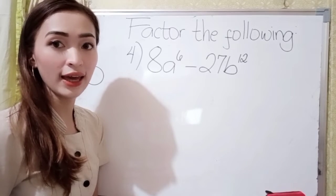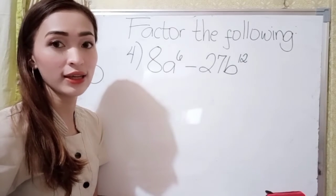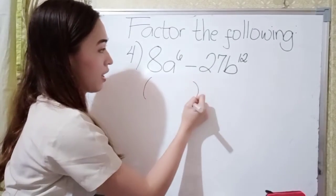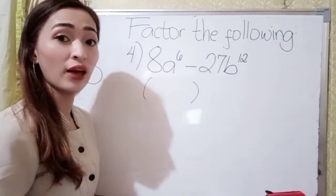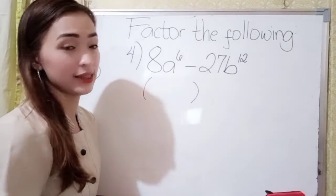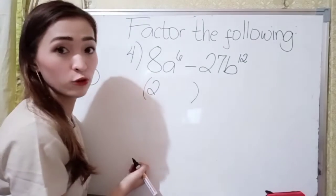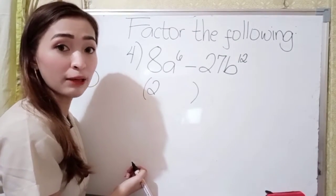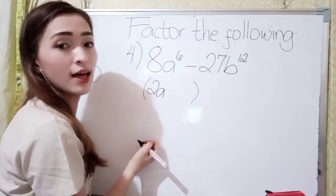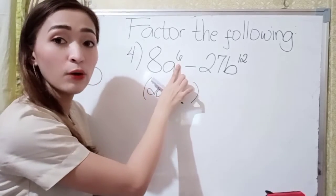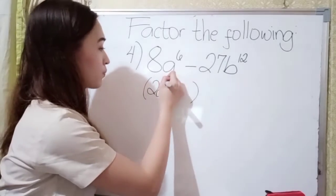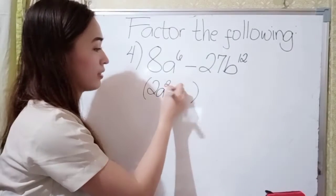For number 4, we have 8a to the 6th power minus 27b to the 12th power. What is the cube root of 8? Think of a number that if you multiply by itself thrice, the answer is 8. So, that is 2, because 2 times 2 is 4, and 4 times 2 is 8. Now, for the exponent of a, just divide it by 3 — 6 divided by 3 is 2. This is minus, so just write minus here.